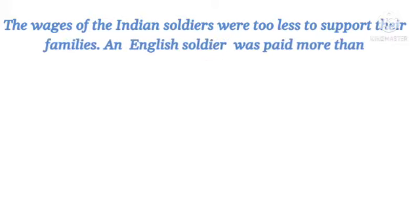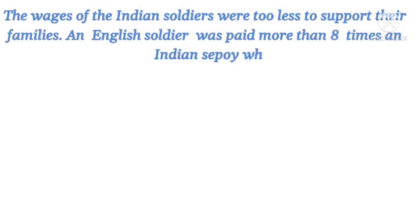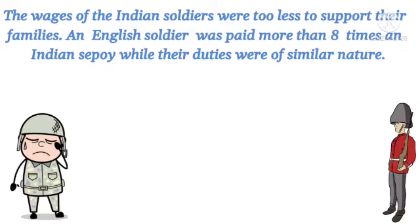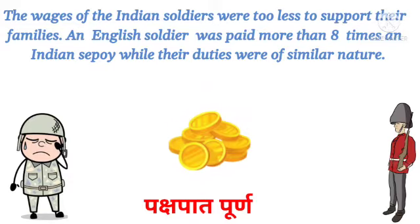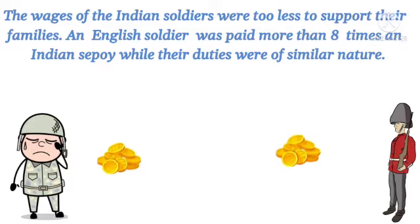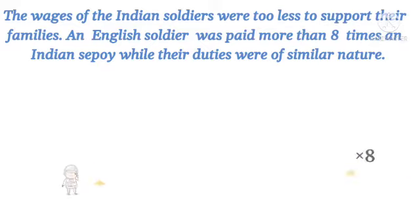Apart from all this, the wages of Indian soldiers were too little to support their families. An English soldier was paid more than eight times an Indian sepoy, while their duties were of a similar nature. In matters of pay, allowances, promotions and postings, Indian soldiers were treated with great discrimination. British soldiers received eight times the salary of Indian soldiers.